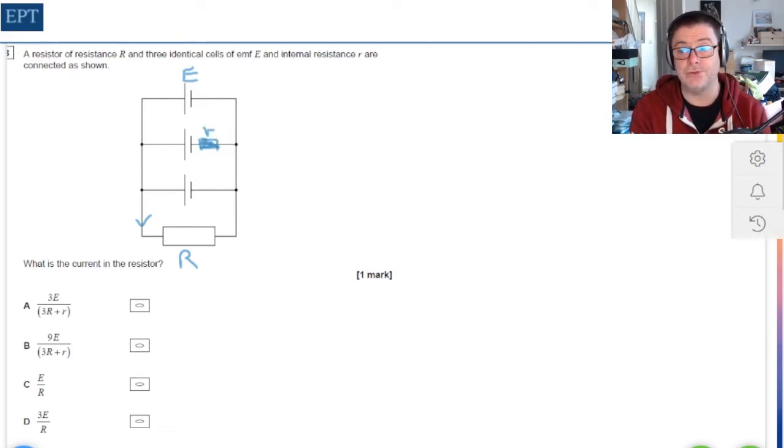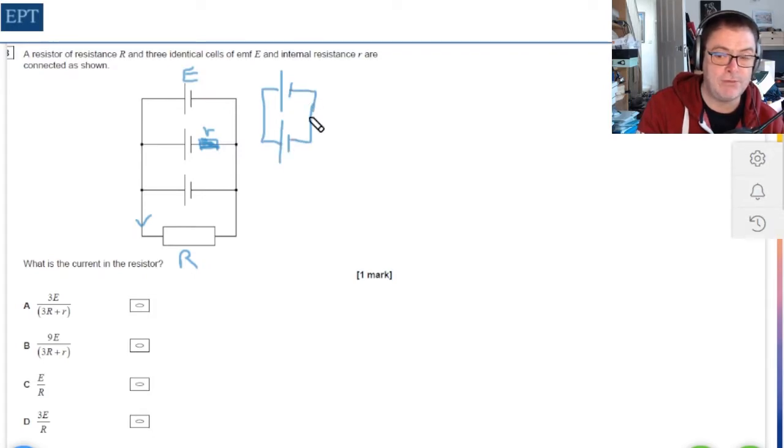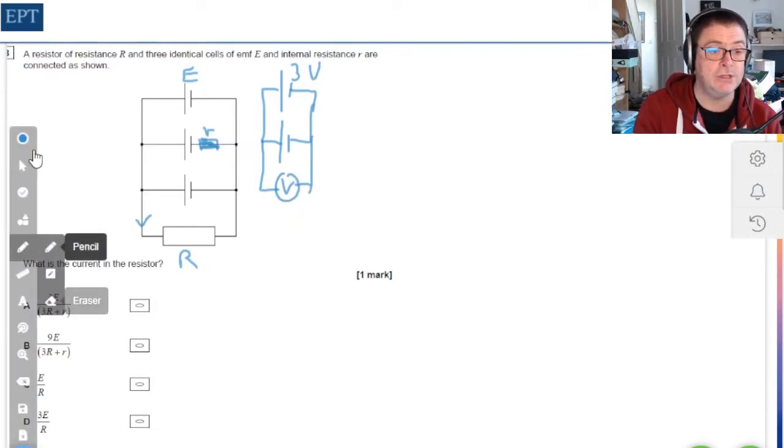I always like to draw diagrams for all my questions. First things first, how do we deal with three cells that are connected in parallel in regards to their EMF? Well, it's actually not that difficult. If you consider two ideal cells, both with no internal resistance, and let's say they both have an EMF of three, then ask yourself what will this voltmeter read. Many of you will go instantly, three volts, but some of you might not be quite so sure.